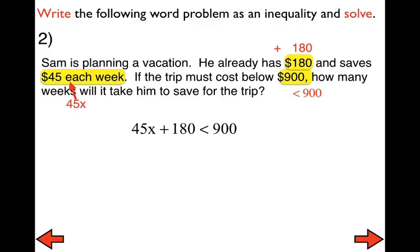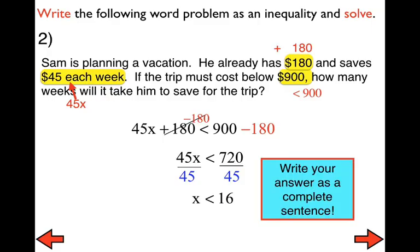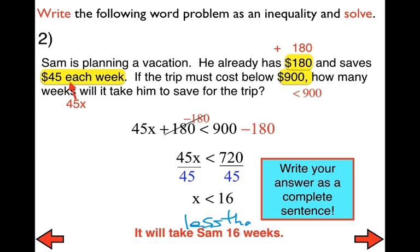To solve this inequality, use the subtraction property of inequalities — subtract 180 from both sides. Now we have 45x is less than 720. Use the division property of inequalities: divide both sides by 45, and we get x is less than 16. However, that's not the full answer. The question is how many weeks will it take him. One sentence that works: 'It will take Sam less than 16 weeks.' You could also use the word 'below,' but 'less than' makes more sense for that problem.